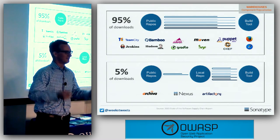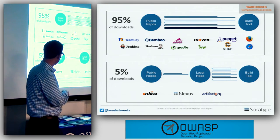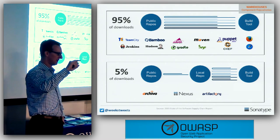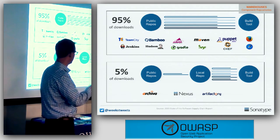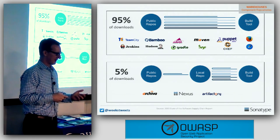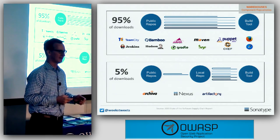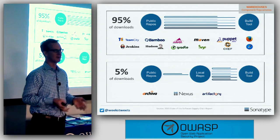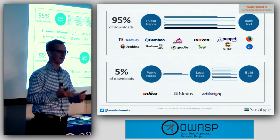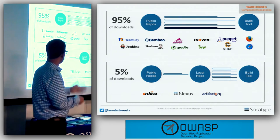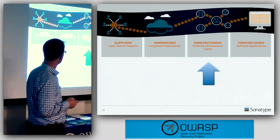There's something called a repository health check from Sonatype. If you have a Nexus repository, it's a free feature — you just turn it on. It will give you a report of every component in your repository and whether it has known vulnerabilities, the versions of those components, and what license types they are. I'll put the link in the meetup notes.